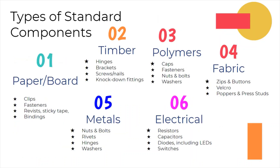Types of standard components. Used with paper and boards: clips, fasteners, rivets, sticky tape and bindings. For timber-based products: hinges, brackets, screws, nails and knock-down fittings.